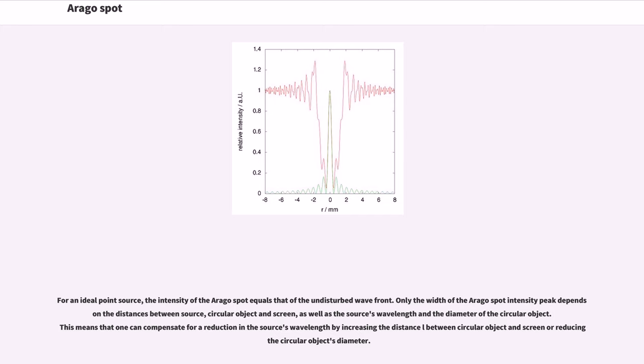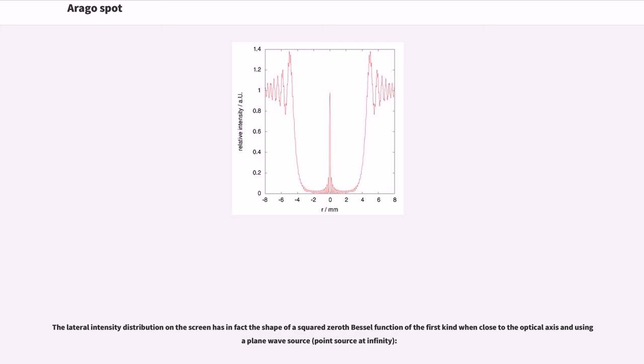This means that one can compensate for a reduction in the source's wavelength by increasing the distance L between circular object and screen or reducing the circular object's diameter. The lateral intensity distribution on the screen has in fact the shape of a squared 0th Bessel function of the first kind when close to the optical axis and using a plane wave source.